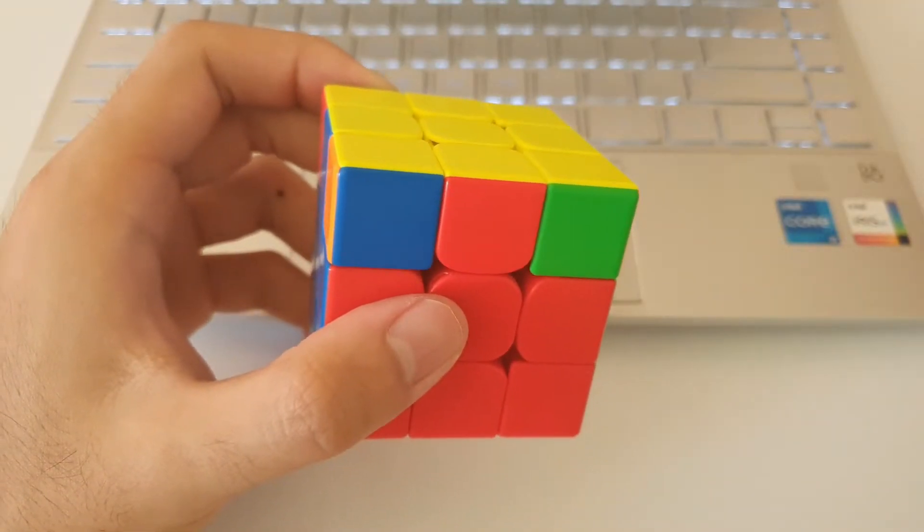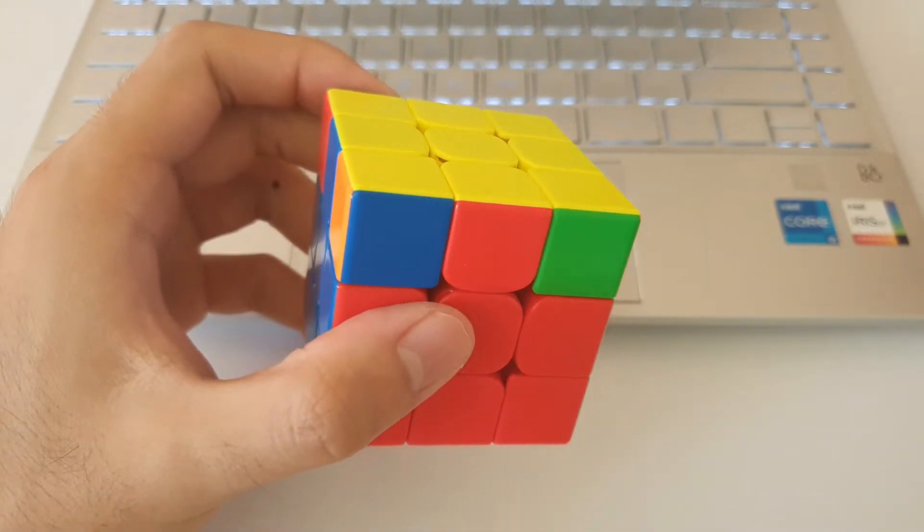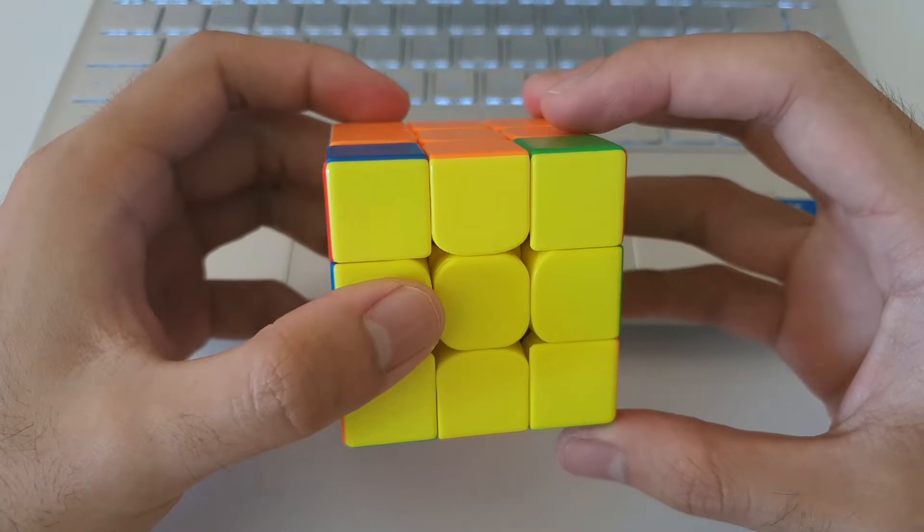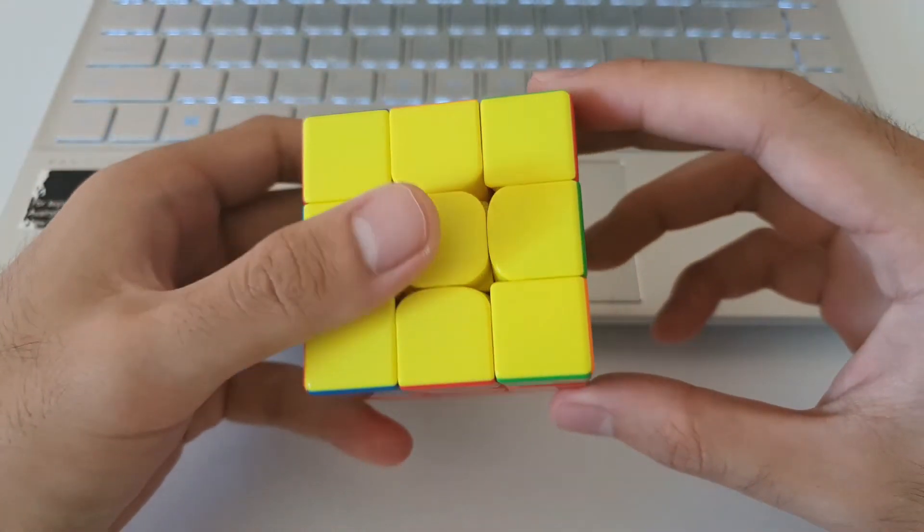So there really is only one popular E-perm algorithm that I would recommend. It's the RUD version which requires a rotation towards the top like this, and the algorithm is shown as follows.